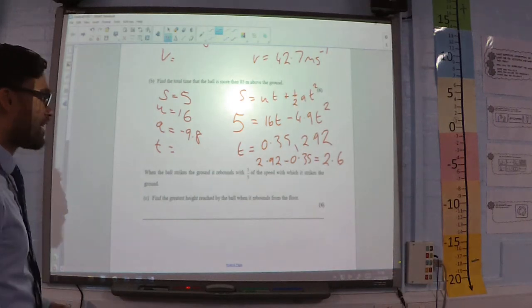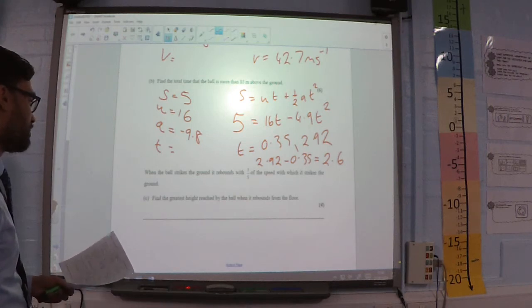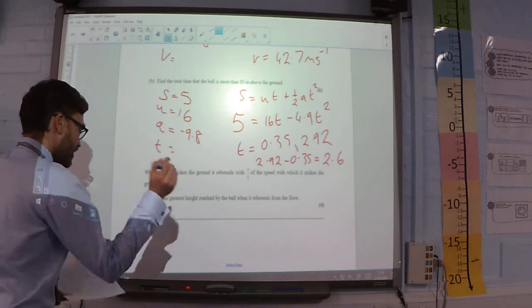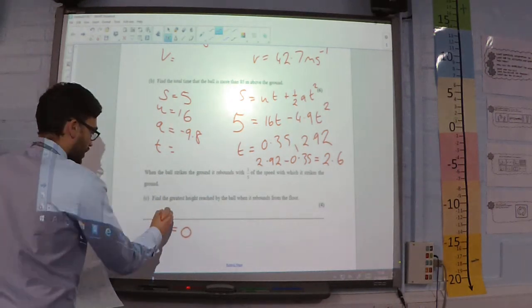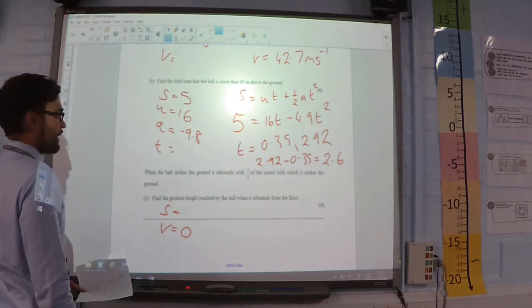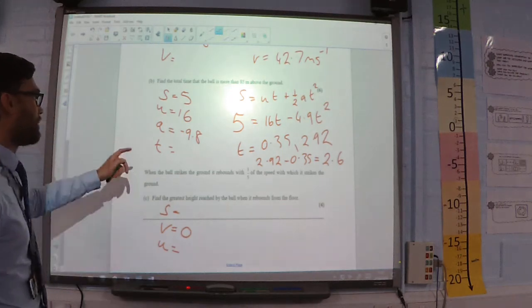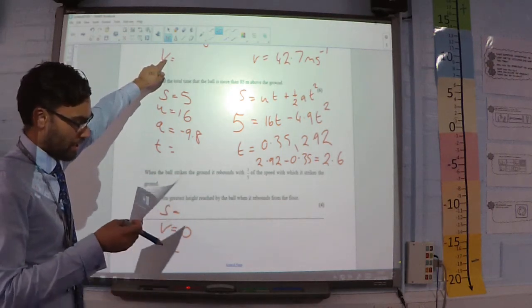When the ball strikes the ground, it rebounds with a fifth of the speed with which it strikes the ground. Find the greatest height reached by the ball when it rebounds from the floor. So, it reaches its greatest height when its final velocity is 0. I'm trying to figure out what that displacement is. I know that the initial velocity is going to be a fifth of this that we worked on as part a.